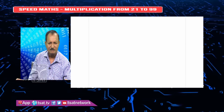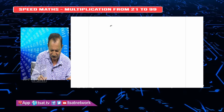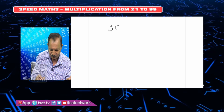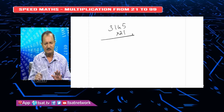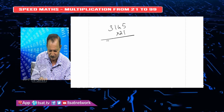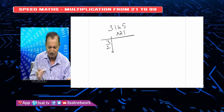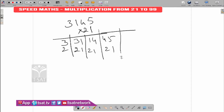Now let us see how to multiply from 21 to 99 in few seconds. Let us see the numbers 31, 14, and 45, each multiplied into 21. This number is 21. First, 3 into 2 — single digit. There was 31 into 21. There was 14 into 21, and finally 5 into 1.